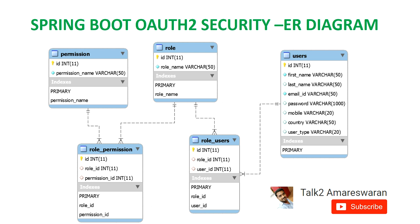It contains the relationship where you can assign one permission to many roles, and one role can contain many permissions. Then we have to create a user table. The user table has attributes such as first name, last name, email ID, password, mobile, country, and user type.